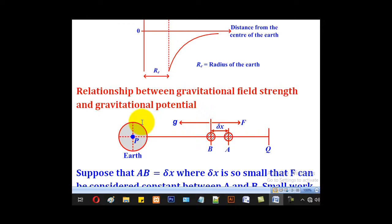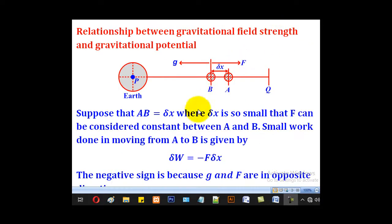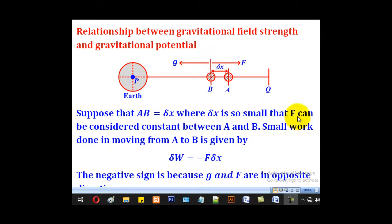Now we shall look at the relationship between gravitational field strength and gravitational potential. Gravitational field strength is the force exerted on a particle of 1 kg in the gravitational field, and gravitational potential is the work done to move a particle of mass 1 kg from infinity to a point in the gravitational field. Suppose that ab equals delta x, a small change in x, where delta x is so small that f can be considered constant between points a and b.